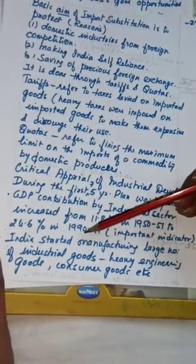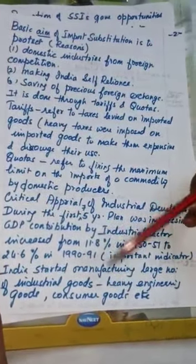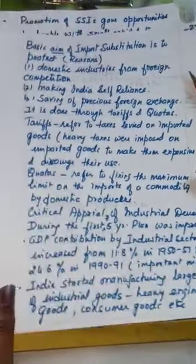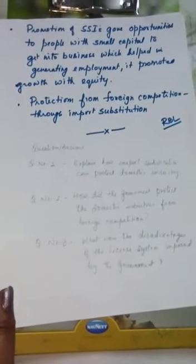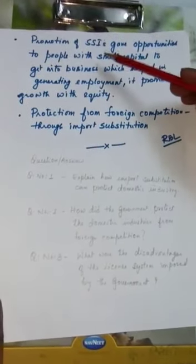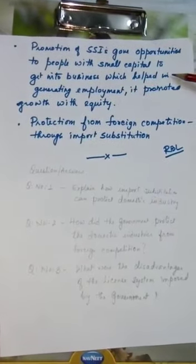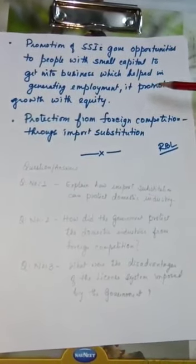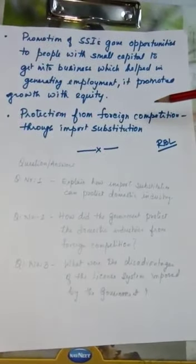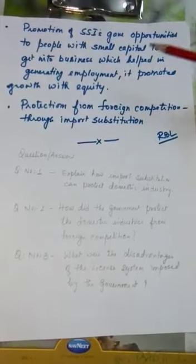India started manufacturing a large number of industrial goods — heavy engineering goods, consumer goods, etc. — meaning the industrial sector became well diversified by 1990. Promotion of small-scale industries gave opportunity to people with small capital to enter business, which helped generate employment and promoted growth with equity. Protection from foreign competition through import substitution was another key effect.